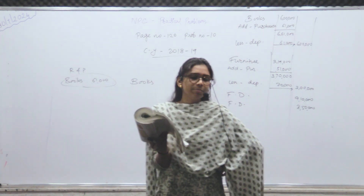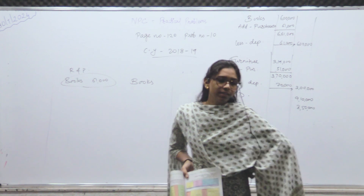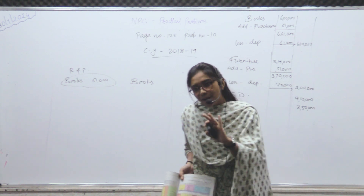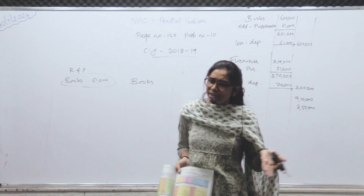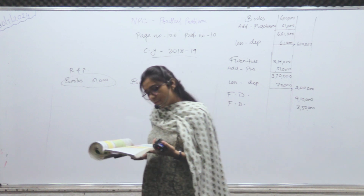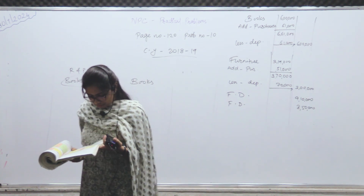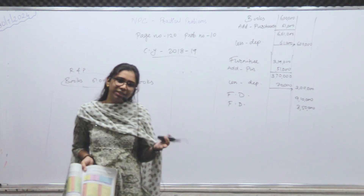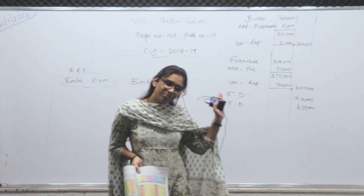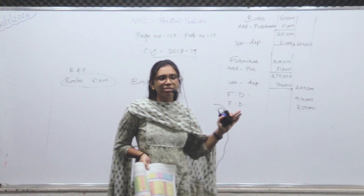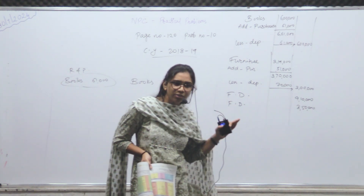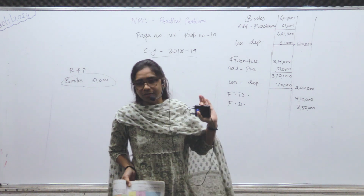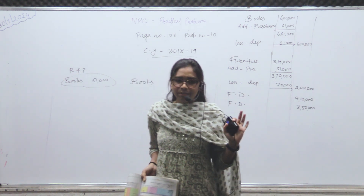Outstanding subscription: 5,300 — current year का subscription — add होगा। Second effect — asset side। Subscription को tick mark। Life membership is capitalized — directly life membership में से less करो, capital में जाकर add कर दो। यह होगा इसका treatment।